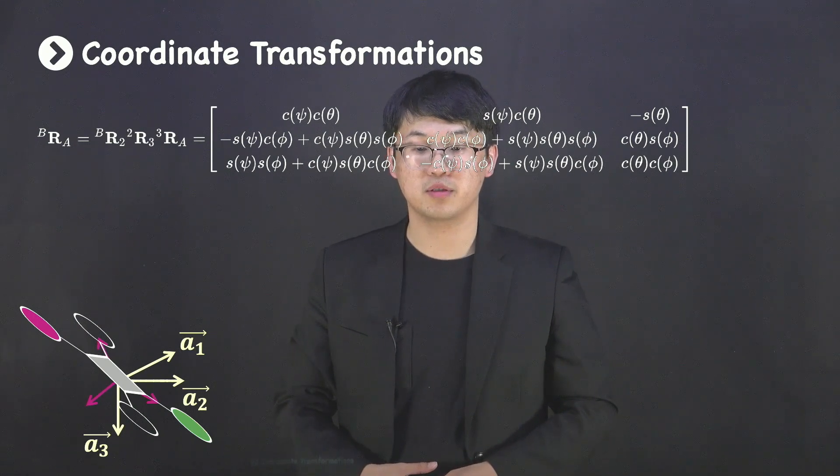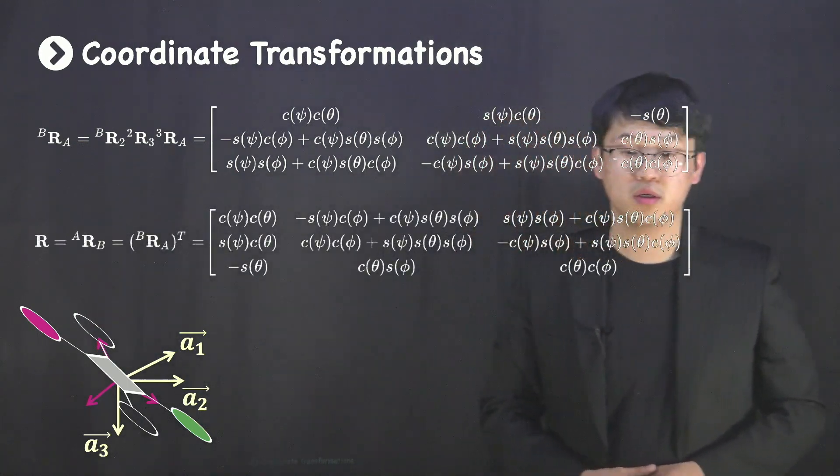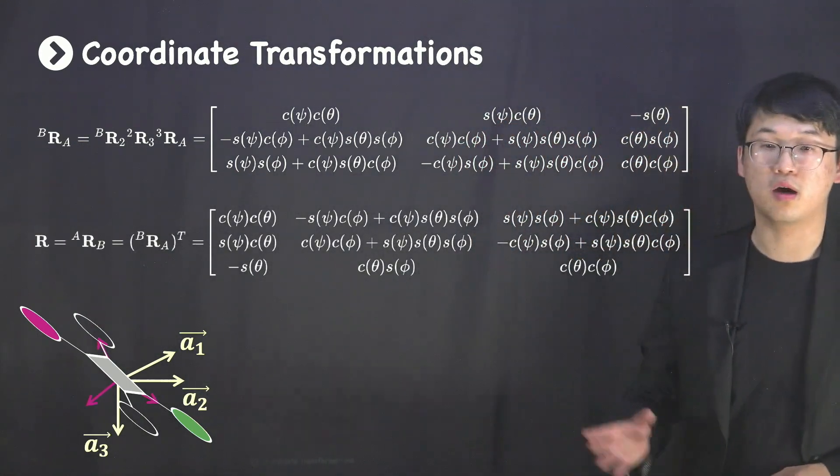So, the rotation matrix that you will see when you try to build the equations of motion would be this R matrix, which is nothing but a transpose of the RBA matrix.